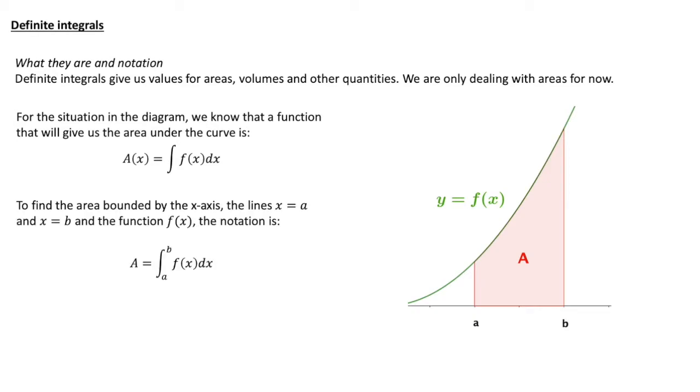To find the area bounded by the x-axis at the bottom, the lines x equals a and x equals b on the left and the right, and the function itself at the top, the notation is A equals the integral between a and b of f dx.